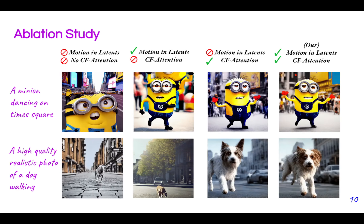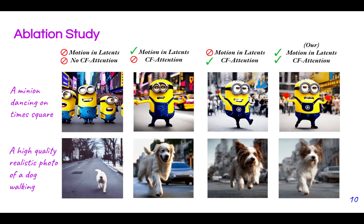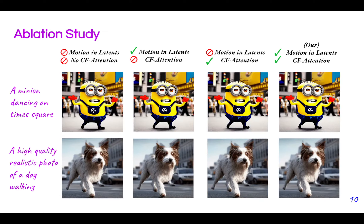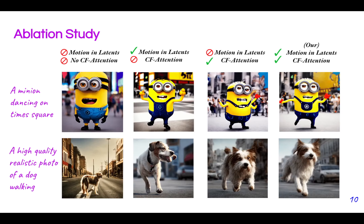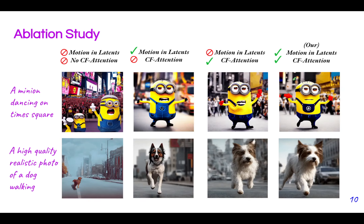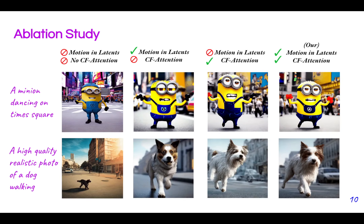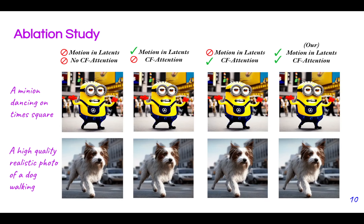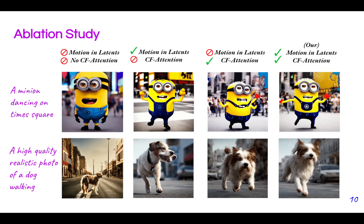And finally, our ablation study shows the importance of introducing motion dynamics in the latent codes and the cross-frame attention. As can be noticed, these components are crucial for consistent foreground and background. Thank you for your time.